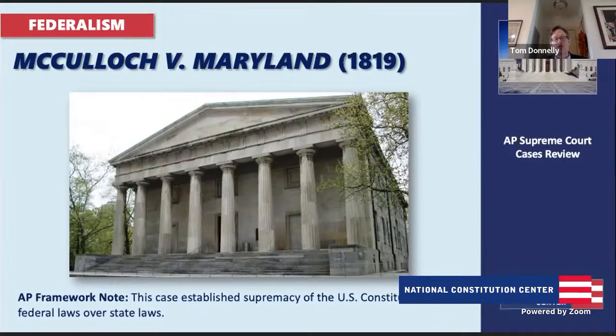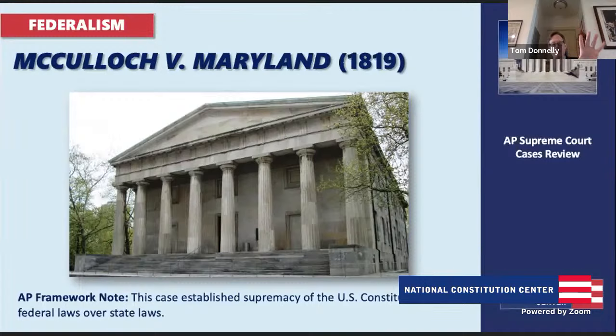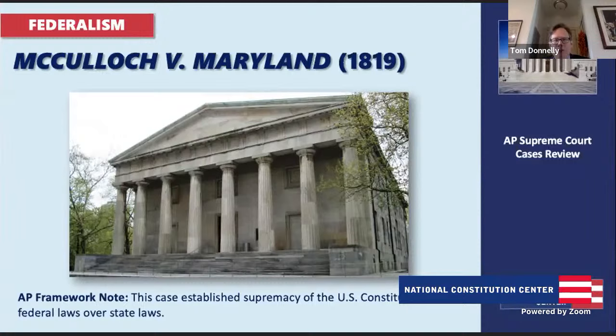Chief Justice Marshall replied that Maryland was not interpreting the Constitution correctly. Sure, the Constitution establishes a national government of limited powers and Article I, Section 8 lists specific congressional powers, but the Constitution also includes the necessary and proper clause. This means Congress has not only specifically listed powers but also implied powers — powers implied by other granted powers. A national bank can be implied from powers to borrow money, tax, and spend for the general welfare.